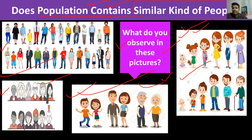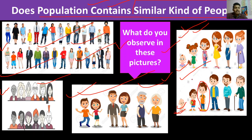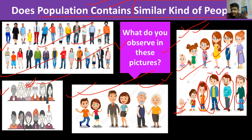The people shown on screen right now are not similar — they are not the same, they are different. Some are children, some are teenagers, some are adults, some are old. There are people of different religions — for example, someone wearing a turban, representing the Sikh religion. There are people in different clothing styles. So the conclusion is: population is not a homogeneous entity. The population is not composed of the same kind of people.